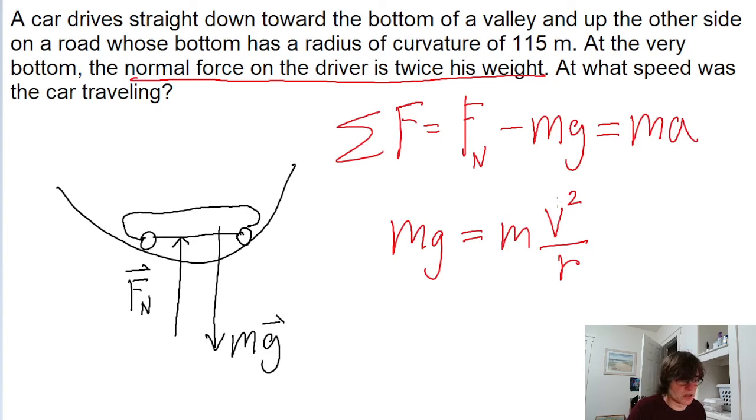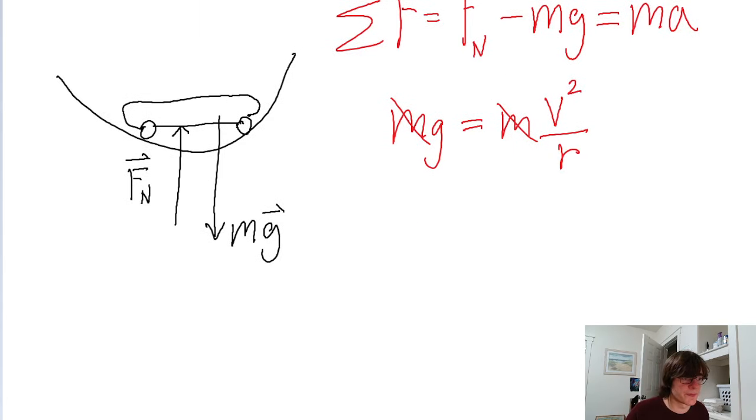So we're trying to solve for the speed, V. And we can cancel out the M's because that's in both parts of the equation. So now the equation we have is that the gravitational acceleration is equal to V squared divided by R. And since we're trying to solve for V, we can rewrite this equation to algebraically solve for V.